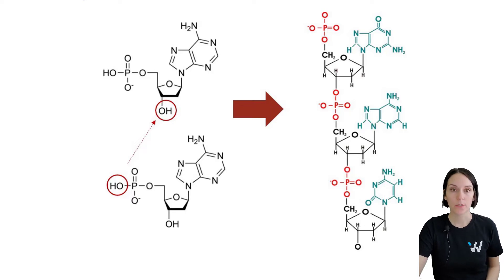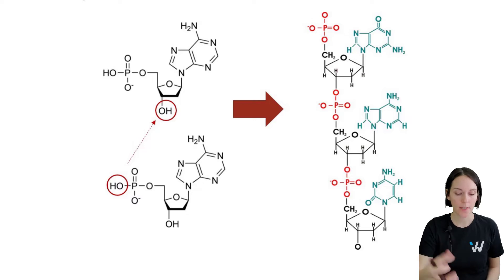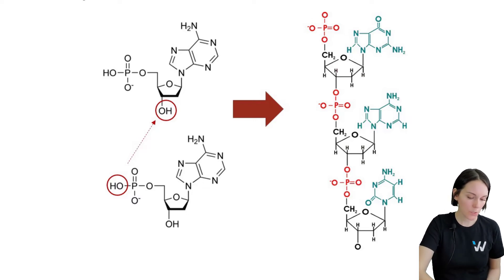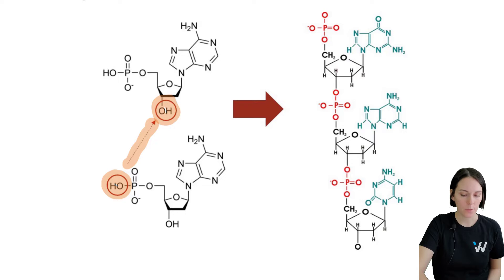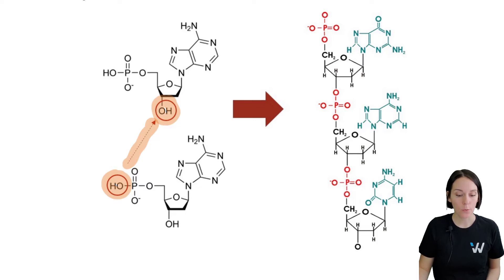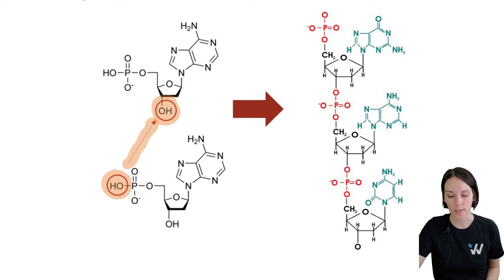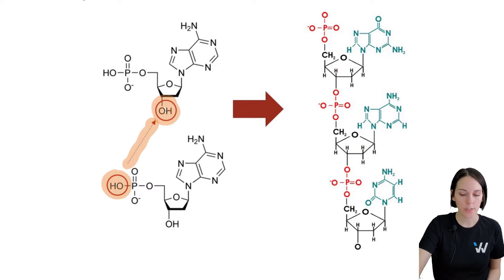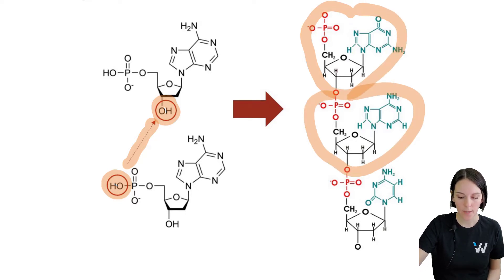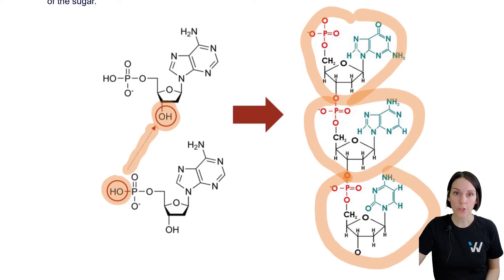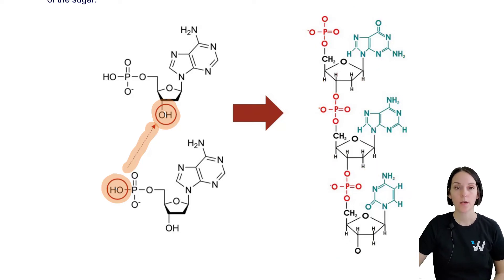The phosphodiester bond forms between the sugar of one nucleotide and the phosphate of the next. Here we have a phosphate group, and the reaction occurs between that phosphate group and the sugar molecule of the other nucleotide. Because this is a dehydration or condensation reaction, a water molecule is removed to form that bond. Looking at the chain on the right, we actually have three nucleotides, and between each of them we have our phosphodiester bond.